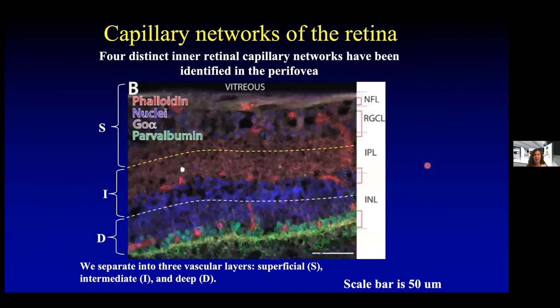One of the benefits of OCT-A angiography is that it allows us to segment the retinal layers so we can see the distinct capillary networks around the fovea, and this was not possible with dye-based fluorescein angiography.